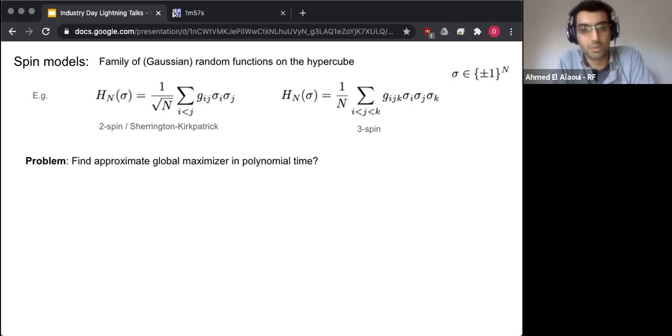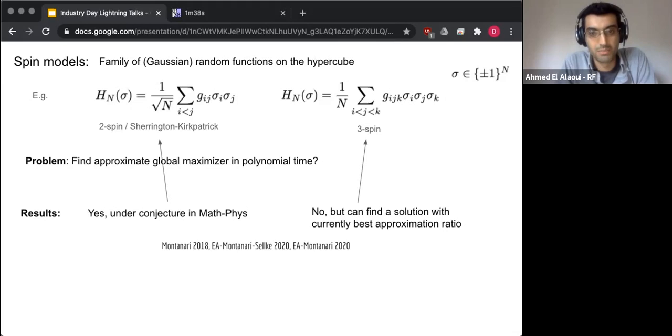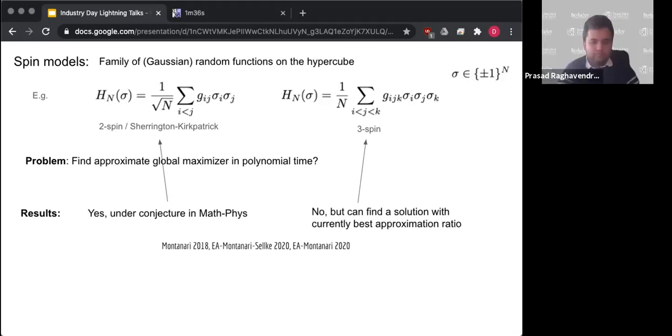The other example, which we call the three spin model is almost the same thing, except that we have a three body interaction instead of a two body interaction. So these are polynomials. The first one is degree two, the second one is degree three and the coefficients are all random. So the problem here is to find approximate maximizers in polynomial time.